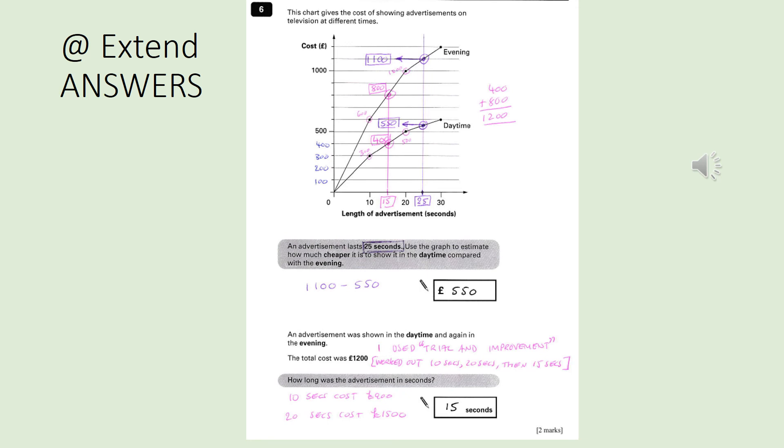The next one was really tricky. So you have got to try and work out how long an advertisement would be if the total cost of when it was shown in the daytime and in the evening was 1,200 pounds. I think the person here has started sensibly and worked out how much it would cost if it were 10 seconds long. So in the daytime, it costs 300 pounds. In the evening, it costs 600 pounds. So when you add those together, it makes 900 pounds. That's not enough money. So we know that the advertisement has to be longer than 10 seconds.